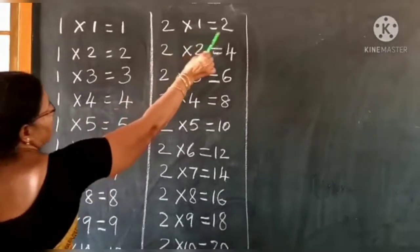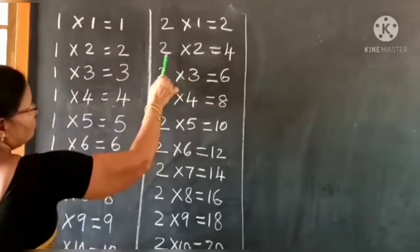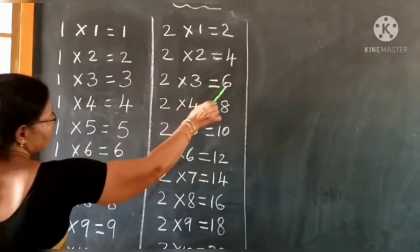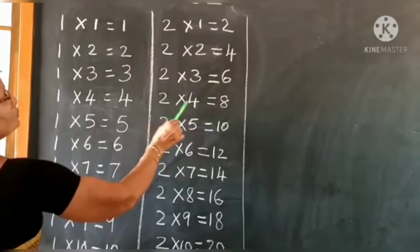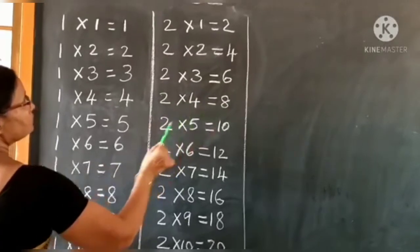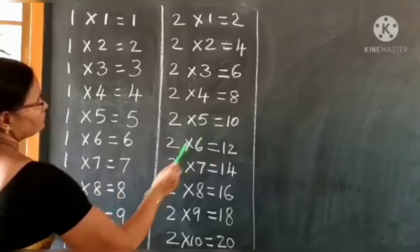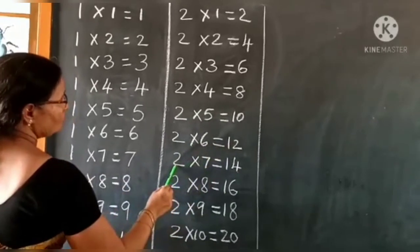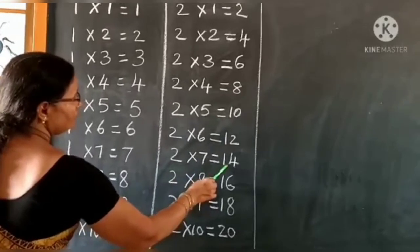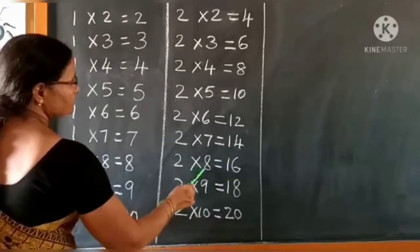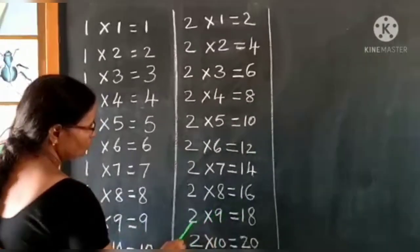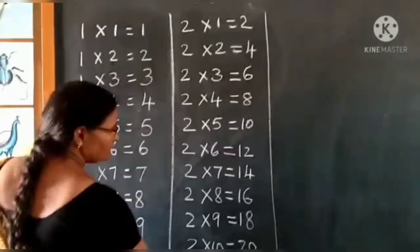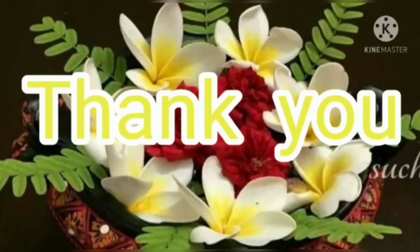Two ones are two, two twos are four, two threes are six, two fours are eight, two fives are ten, two sixes are twelve, two sevens are fourteen, two eights are sixteen, two nines are eighteen, two tens are twenty. Thank you children.